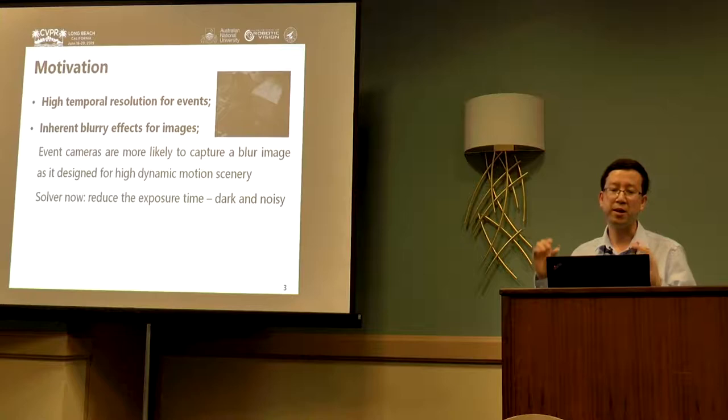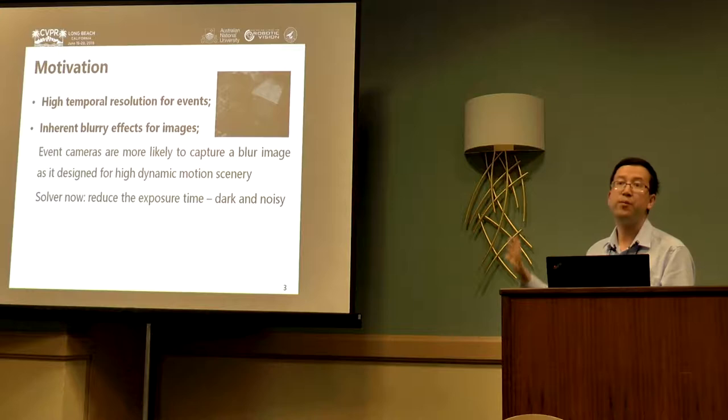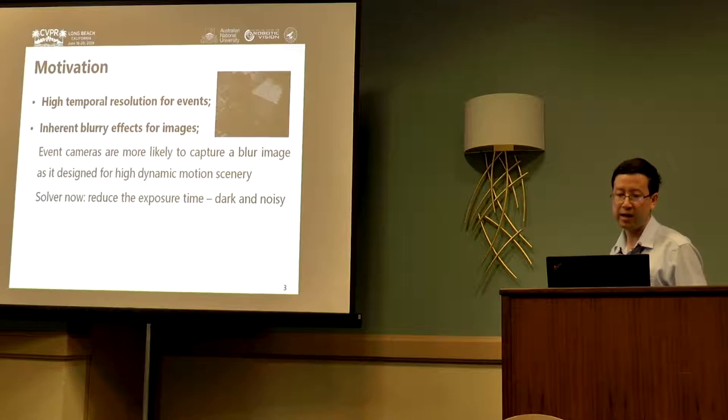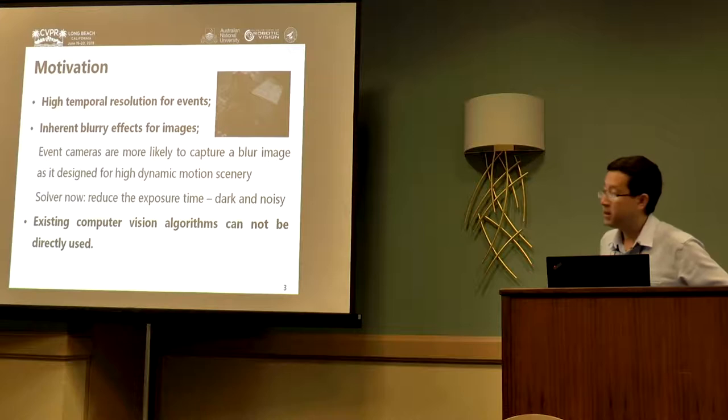Why? Because we use event cameras to capture dynamic scenes. We're interested in capturing dynamic scenes, so blur will generally happen for the grayscale image, because we're very interested in this highly dynamic motion area.